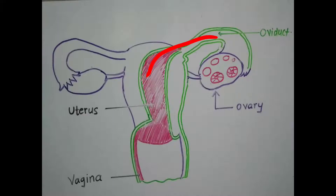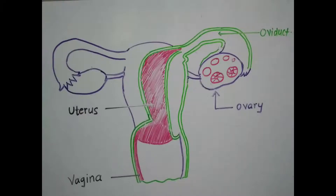In the uterus, the zygote is converted into an embryo — a group of cells that will turn into the growing child, the growing fetus. The growing fetus needs a lot of care, nutrition, and protection, so the uterus forms the endometrium.